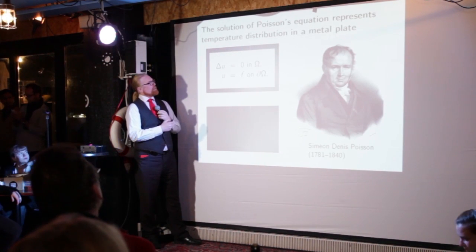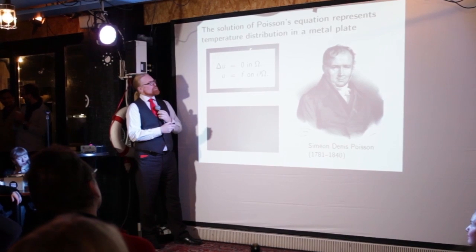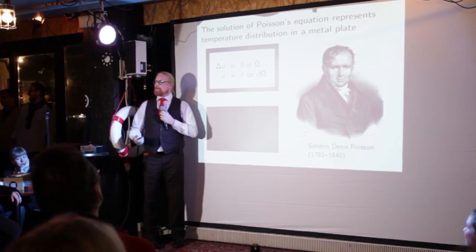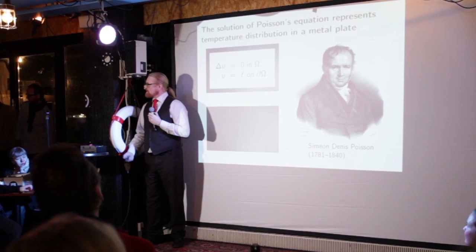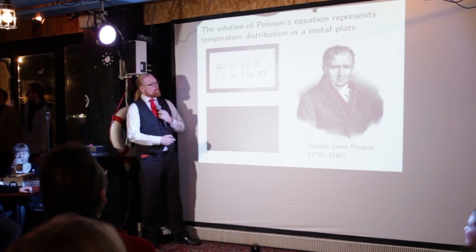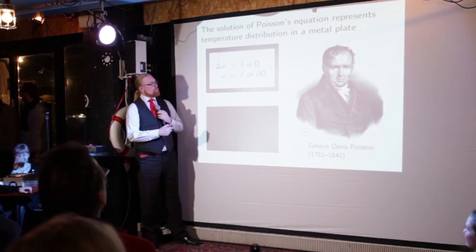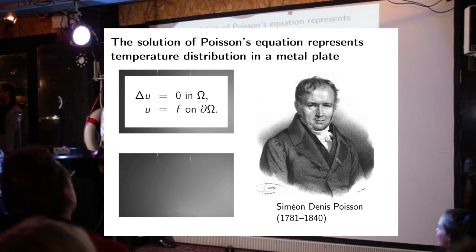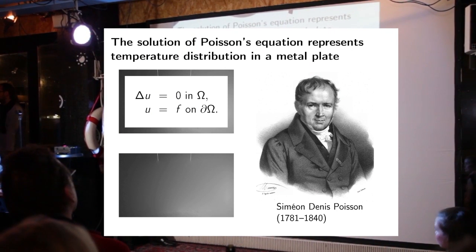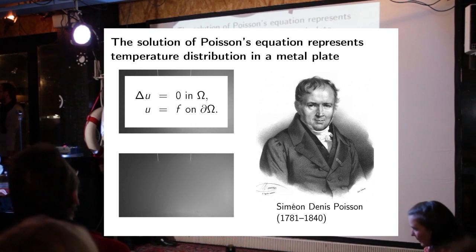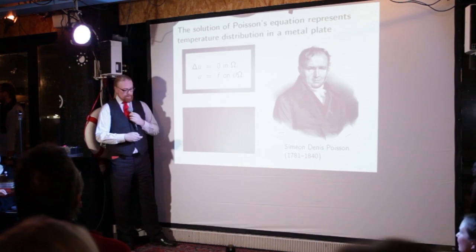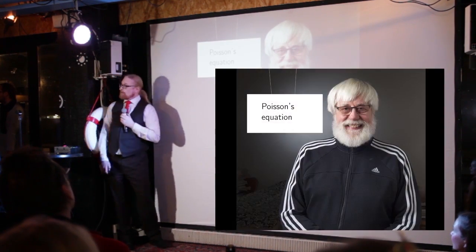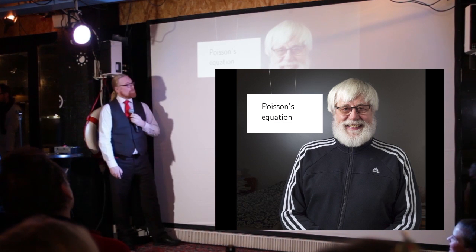Physically thinking, these are just numbers around here — these three values. We can think of them as temperature, in centigrade. And then this equation describes what is the temperature distribution inside a metal plate if the temperature is fixed around the edges of the metal plate. So we can go on and use the equation of Professor Poisson.